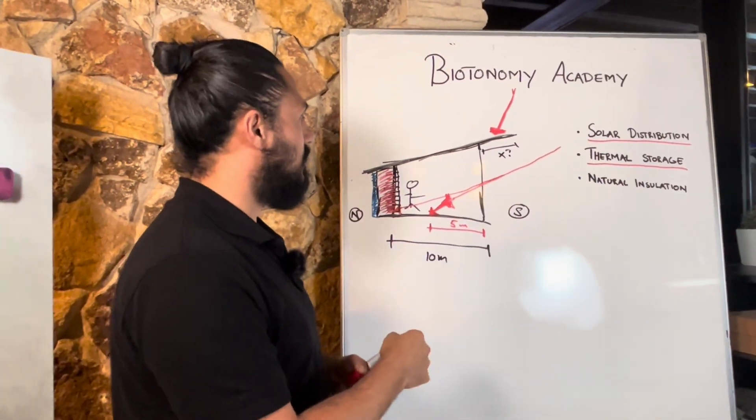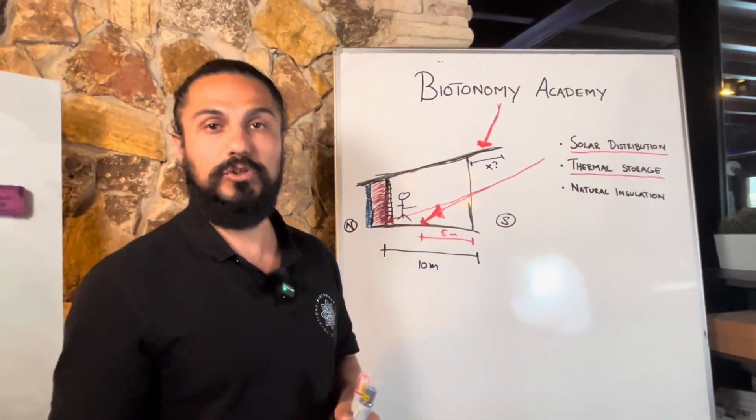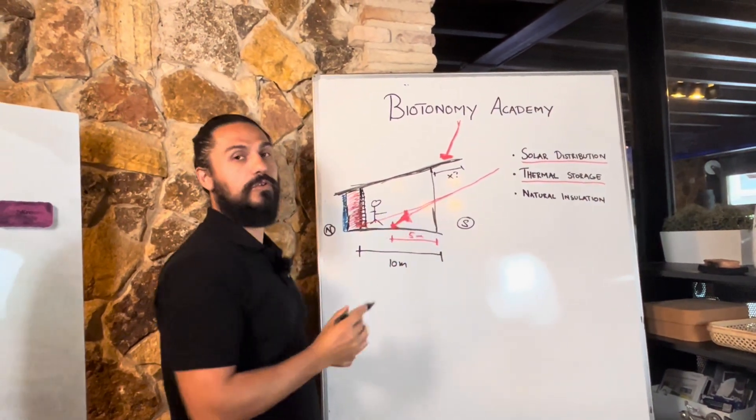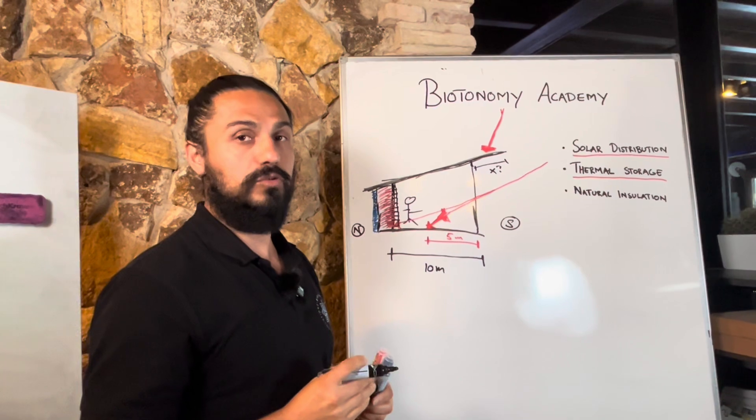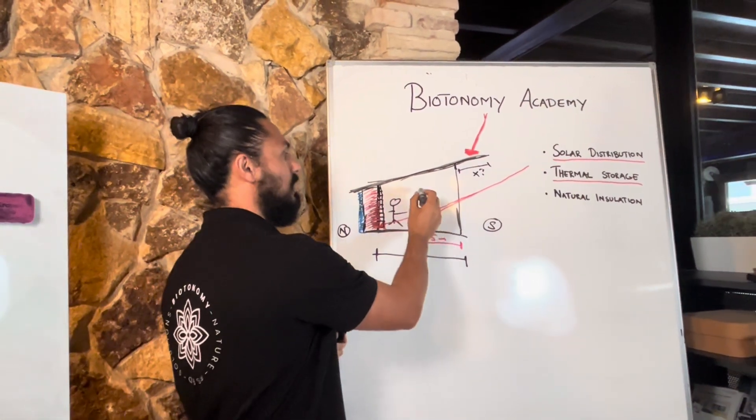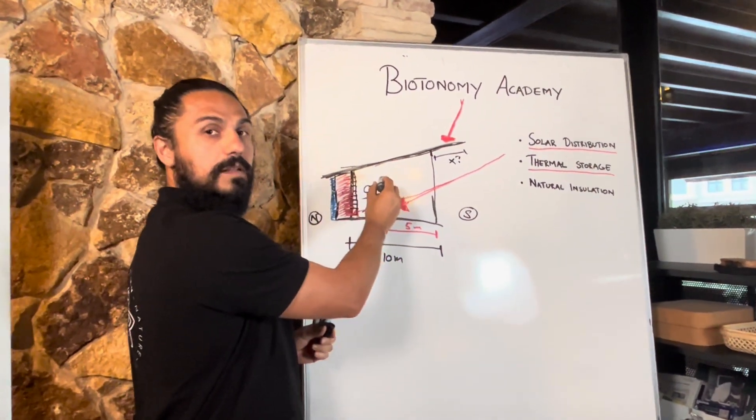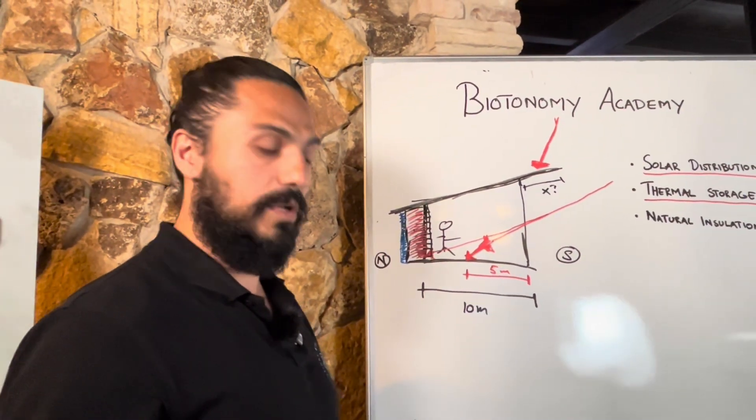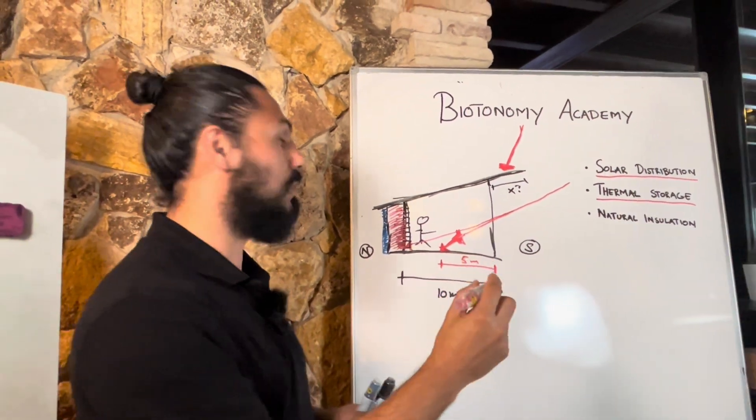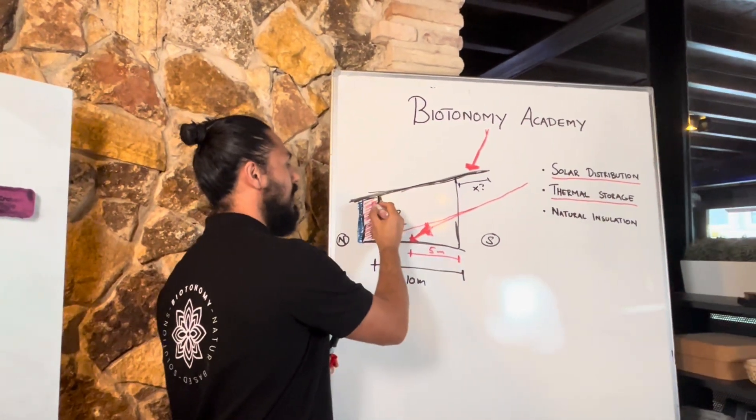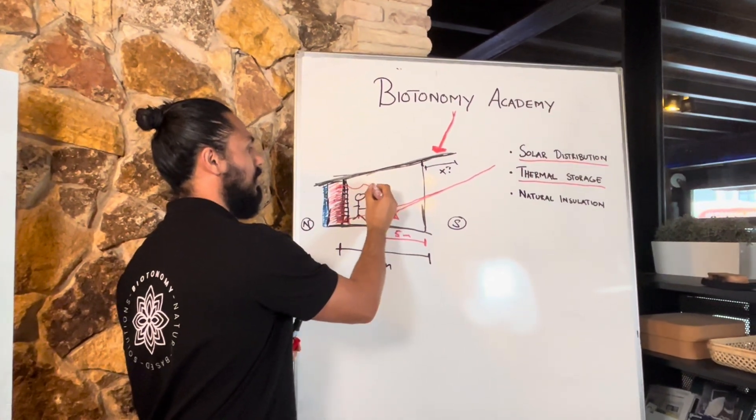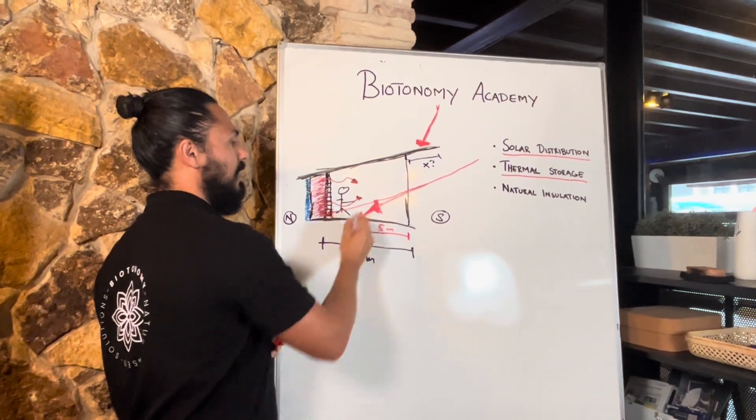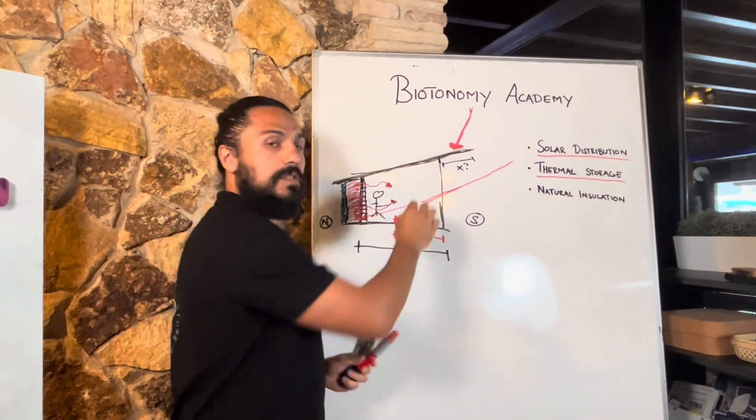So what happens is that at night when the temperatures drop outside, then the temperatures of your room is gonna also wanting to drop. As soon as it starts getting a little bit colder inside, what's happening because of physics, because heat always moves from warm to cold, what's going to happen at night is that the temperatures that you stored here is going to start seeping out into your living area and maintain this space comfortable.